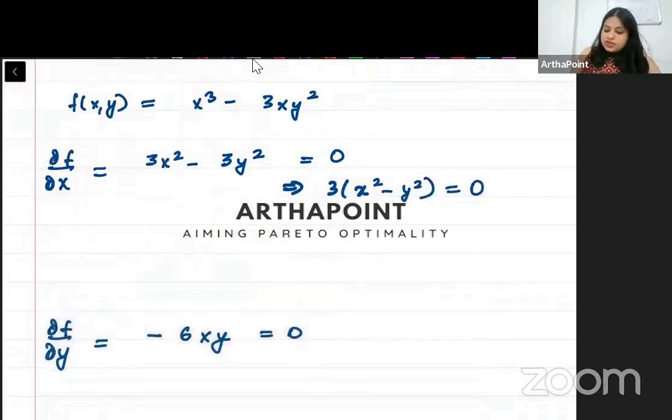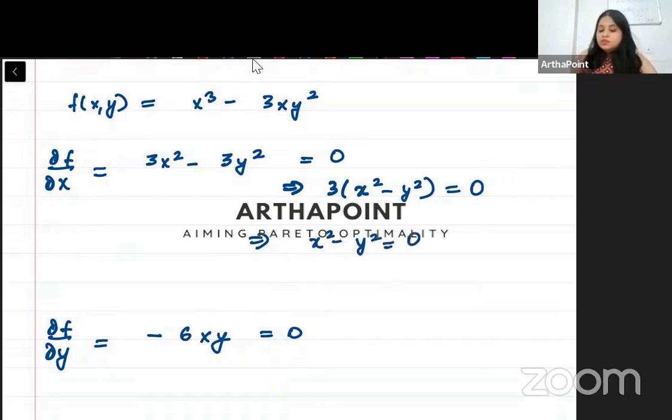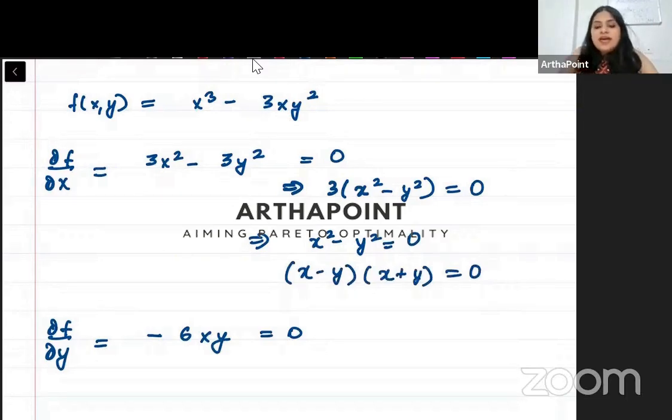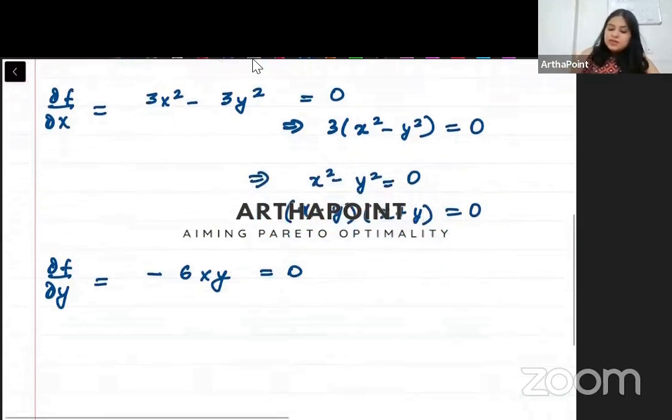Let me insert some space here. 3 ko right hand side pe lekke jaa sakta hai. So x squared minus y squared is 0, which factors as (x minus y)(x plus y) equals 0.